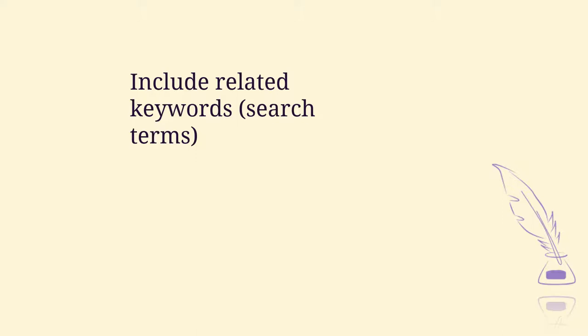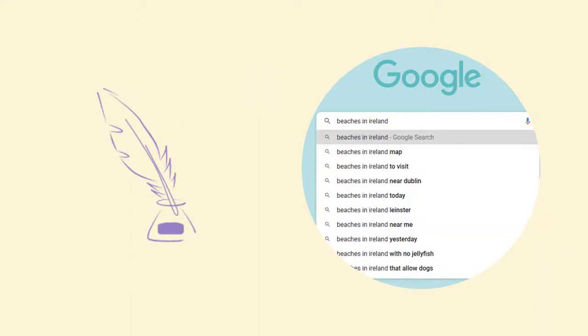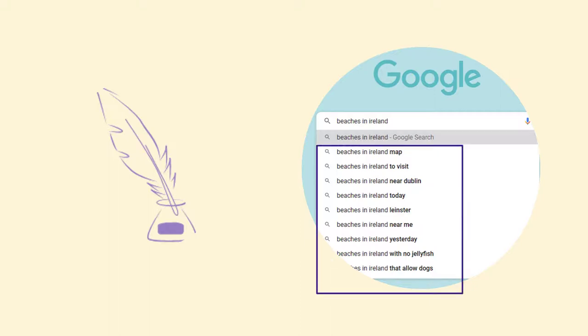Another point is to include related keywords or search terms in the post. What are these related keywords and how do you know what they are? Most of the time you will be including them naturally by default, but if you go to Google and type anything in, Google will first show you what's called the instant results — these are other related search terms that other people are typing in, and you're going to see the most popular ones.